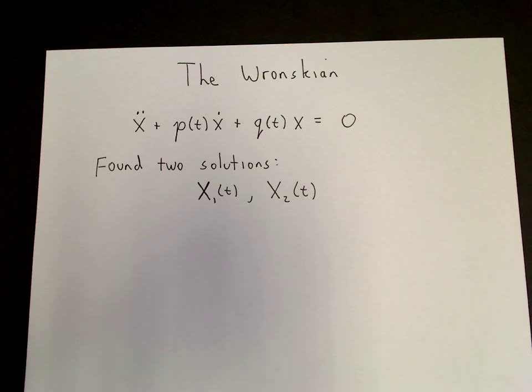In this video I'll explain the concept of the Wronskian. So we're considering a second order linear ODE, x double dot plus p, which is a function of time, times x dot plus q times x equals zero.